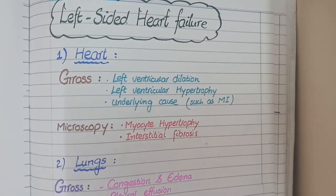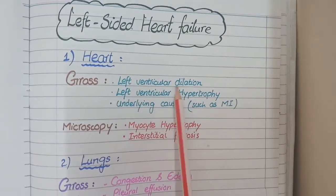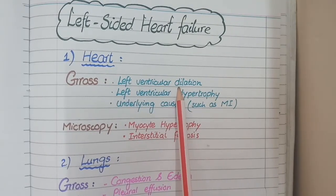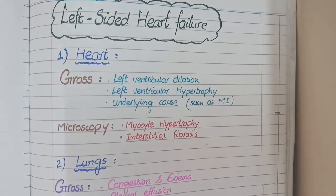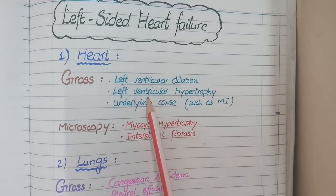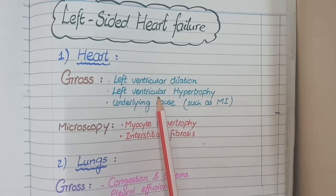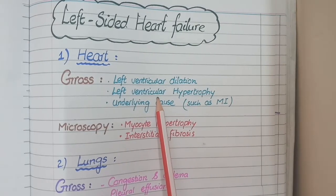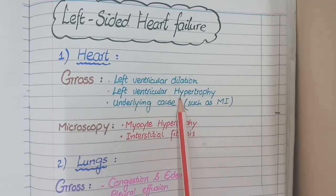In left-sided heart failure, the left ventricle is unable to fully pump blood out of its cavity, so it becomes dilated due to fluid overload. Secondly, a compensatory mechanism starts, making the walls of the left ventricle unusually thick. These thick walls are meant to eject the blood more forcefully.